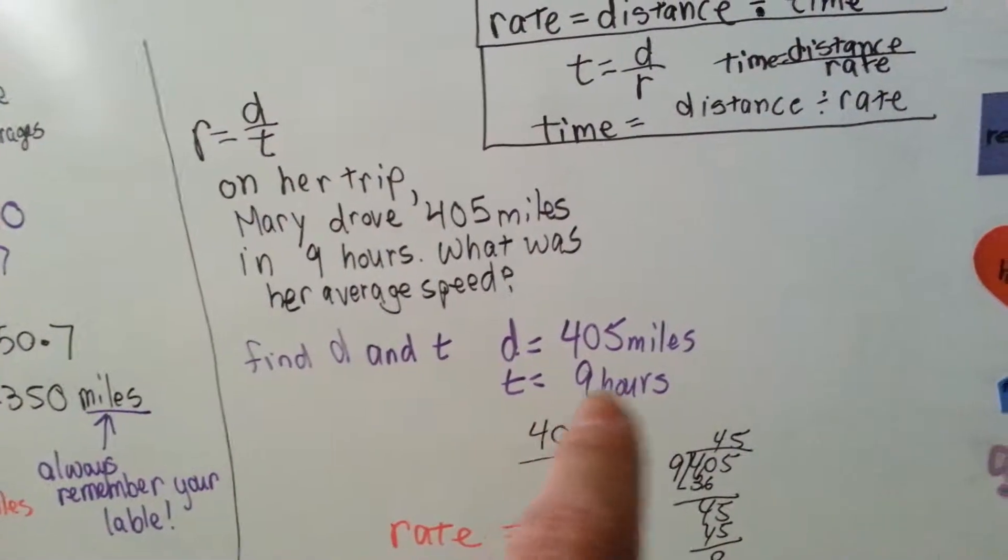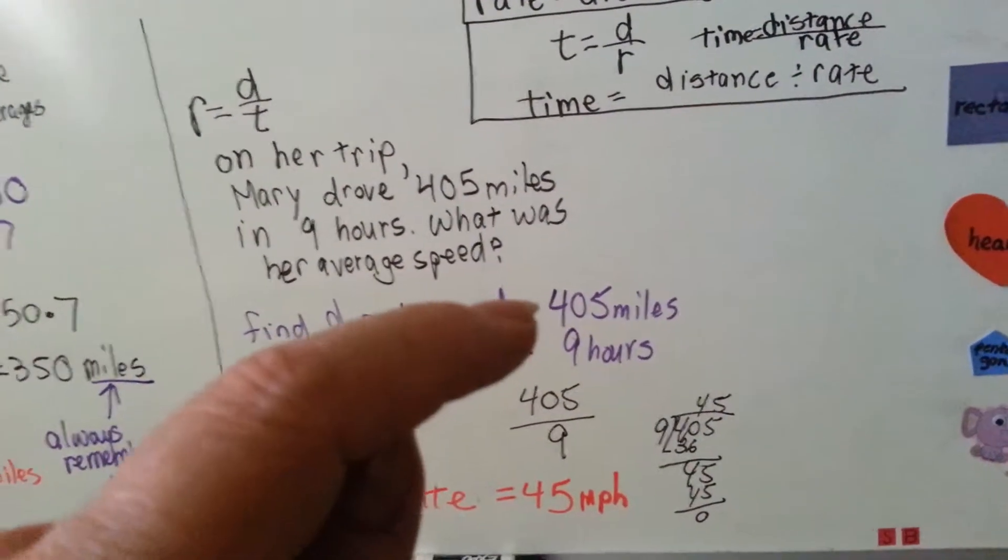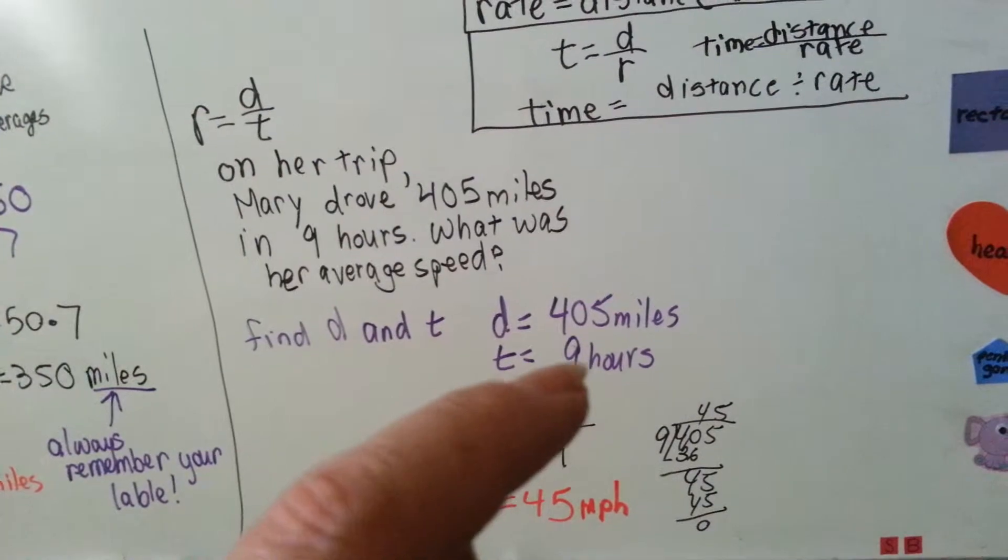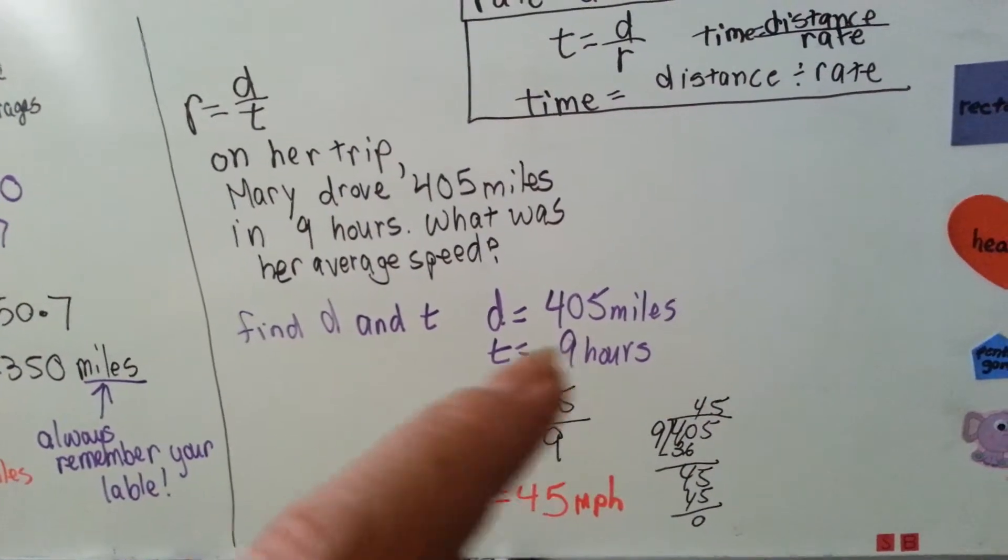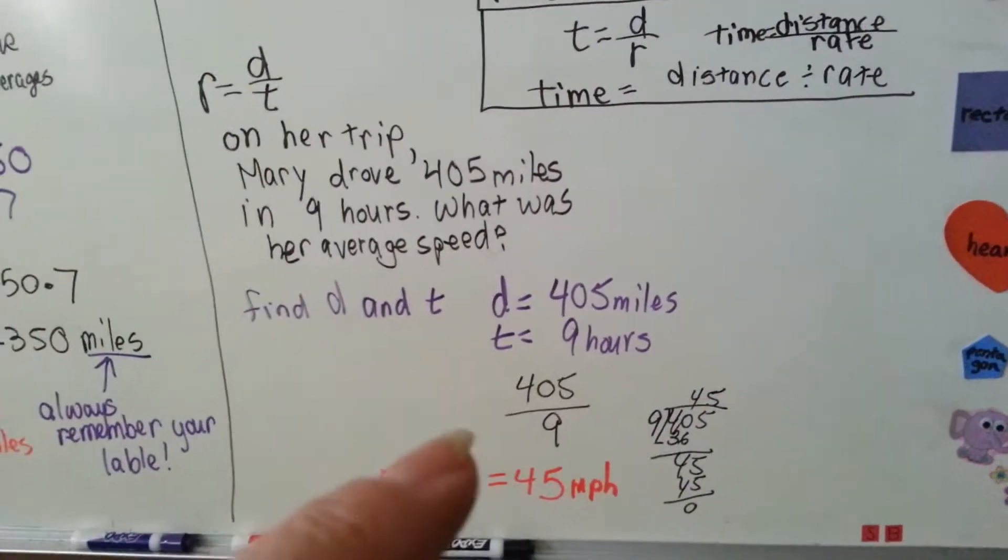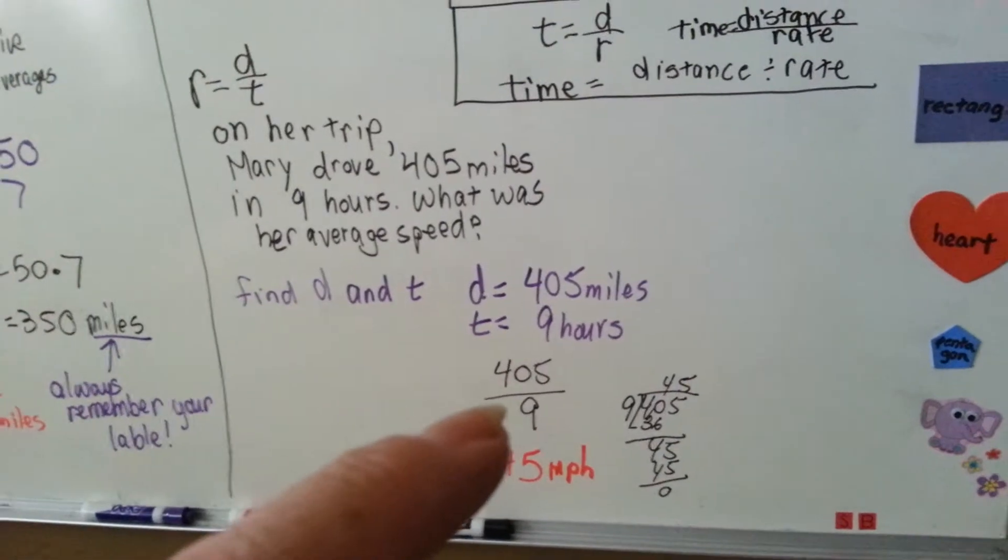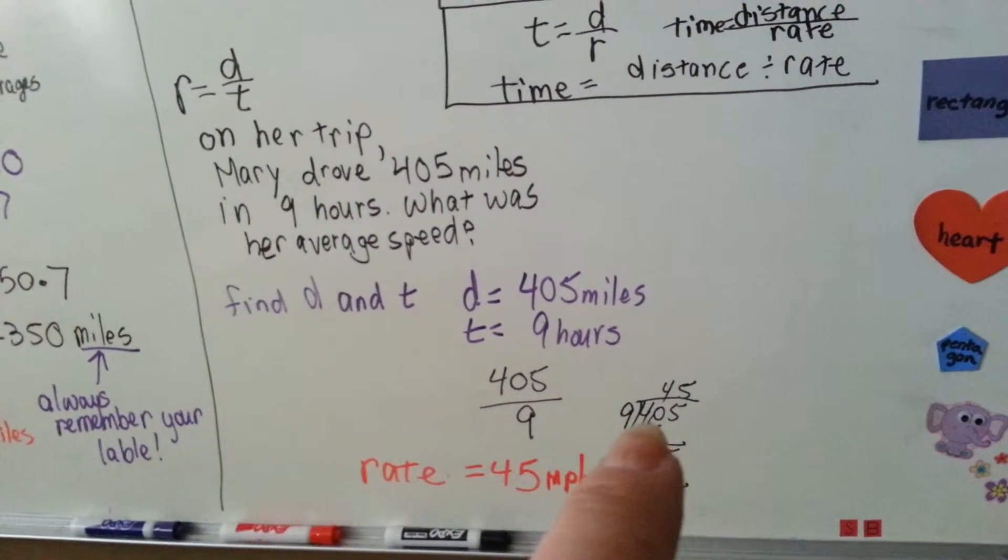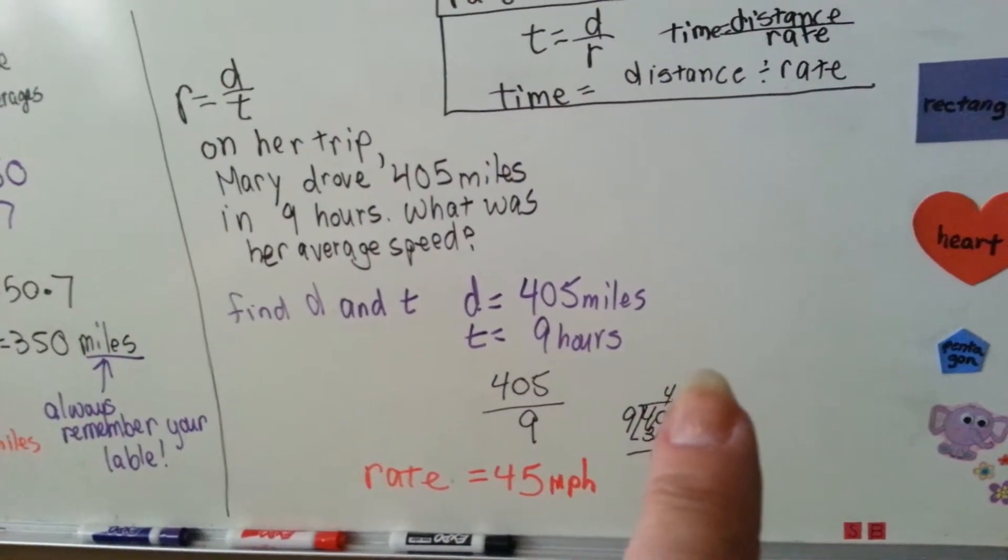The time it took her was nine hours. So now we're going to multiply the D and the T. We're going to divide the D and the T, I'm sorry. So 405 divided by nine. Nine goes into 405. Well, it goes into 40.